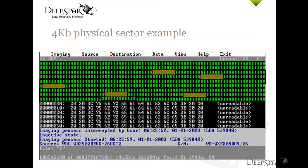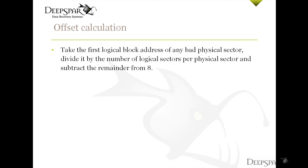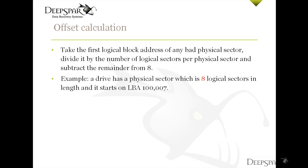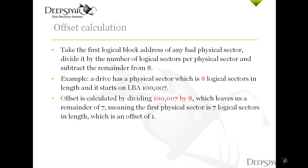The offset is calculated by taking the first logical block address (LBA) of any bad physical sector, dividing it by the number of logical sectors per physical sector, and subtracting the remainder from 8. For example, if we spotted a bad physical sector which is 8 logical sectors in length and which starts on LBA 100,007, we calculate the offset by dividing 100,007 by 8, which leaves a remainder of 7, meaning the first physical sector is 7 logical sectors in length — which is an offset of 1.